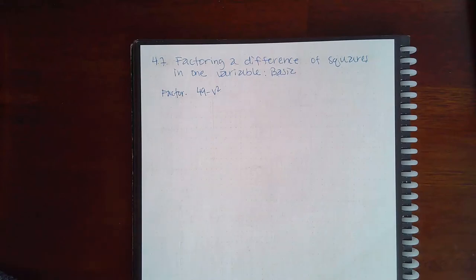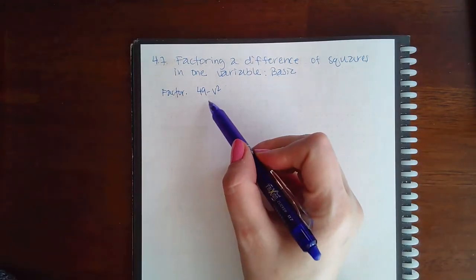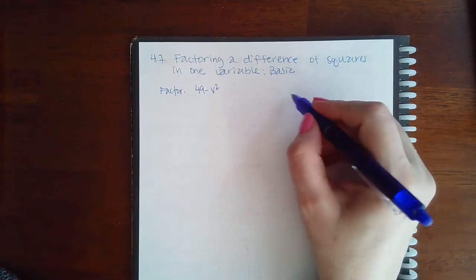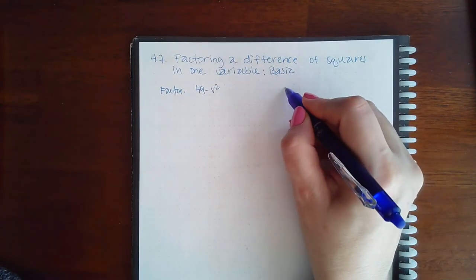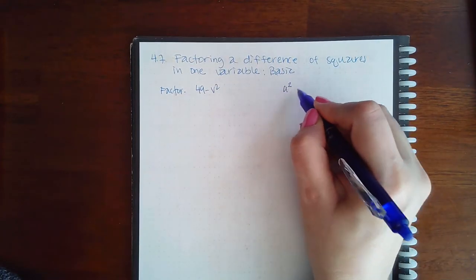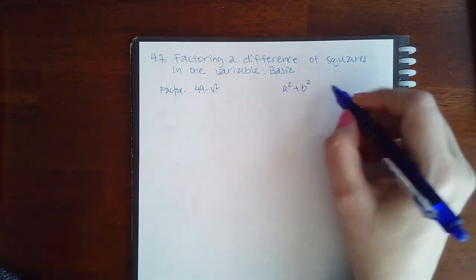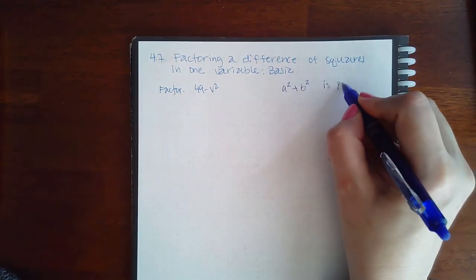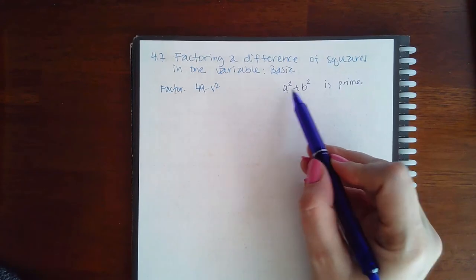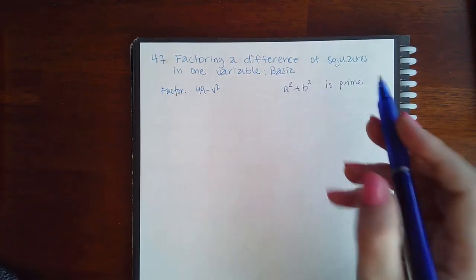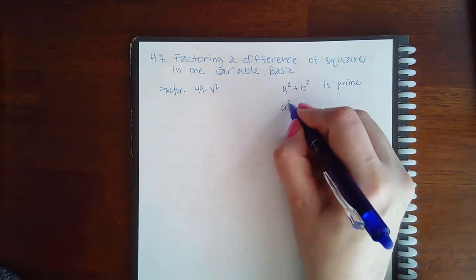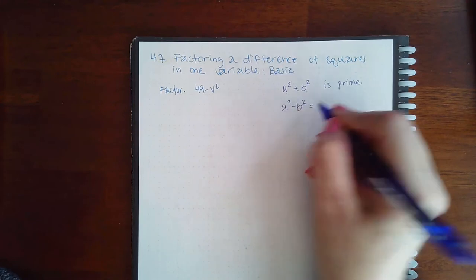So here's 4.7, factoring a difference of squares in one variable, basic. We have to use our difference of squares formula. For squares, there's two formulas: there's a squared plus b squared, which is prime—you can never factor something when it's a perfect square plus another perfect square. But you also have a squared minus b squared.